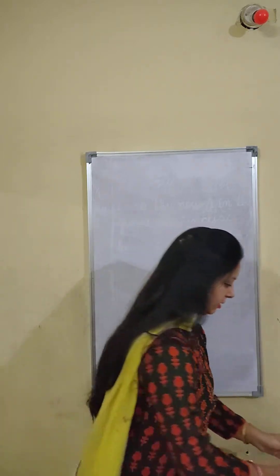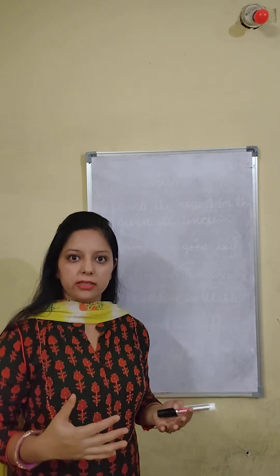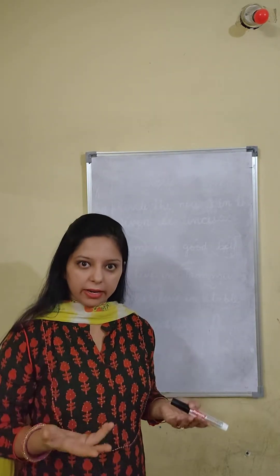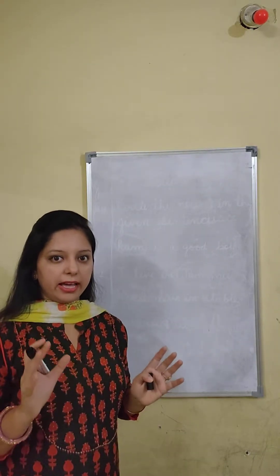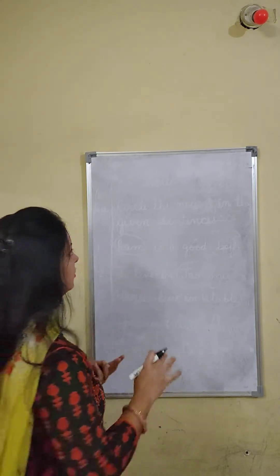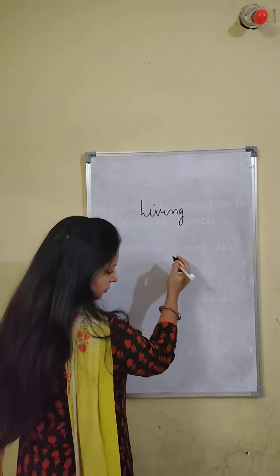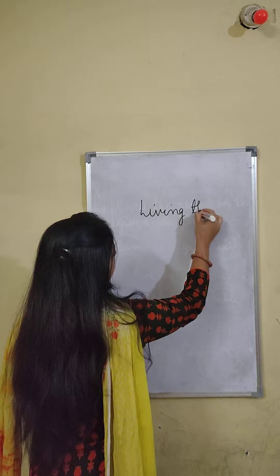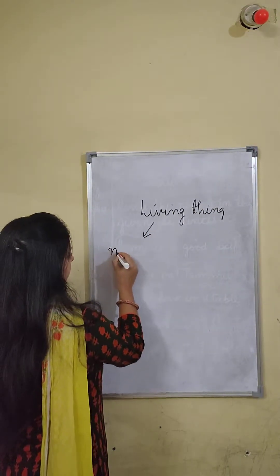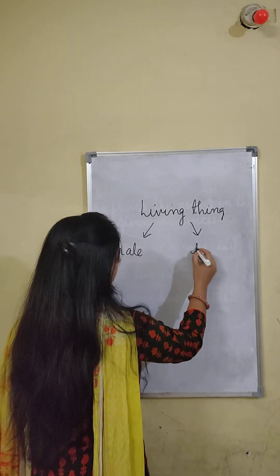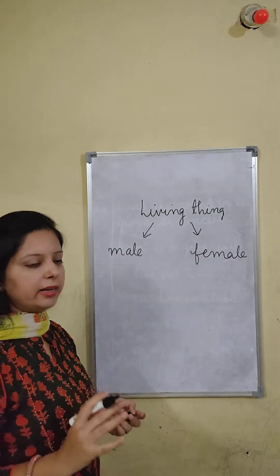So children, what was the fun in showing all these animals to you? Horse and mare, cock and hen — all living organisms are either male or female. All living things. Jinke bhi zinda insaan, janvar hote hain, ya toh male hote hain ya toh female hote hain. So what is male or female? Let's try to understand that.